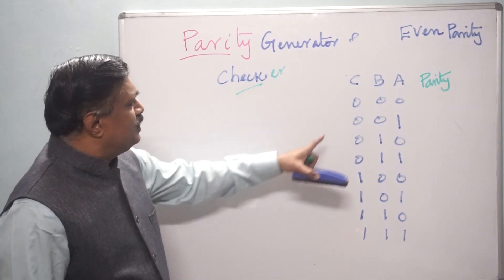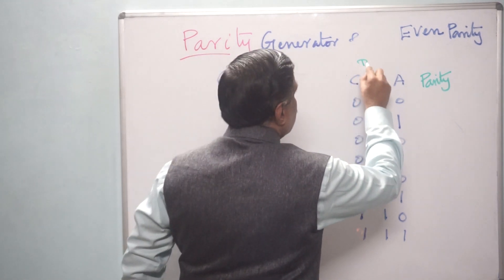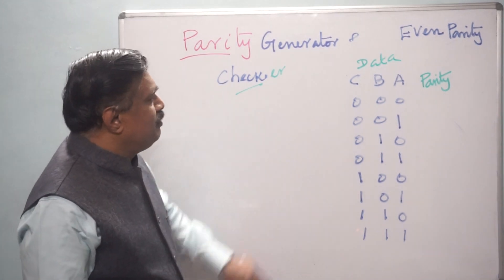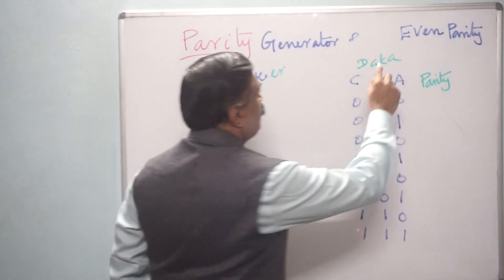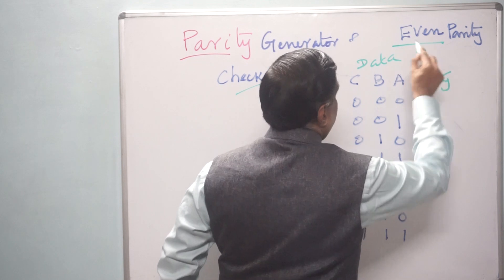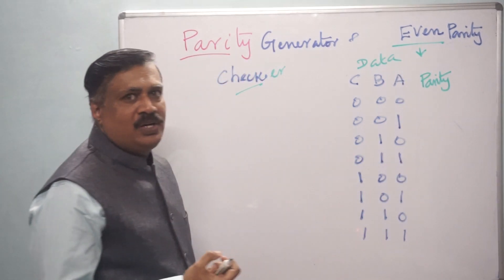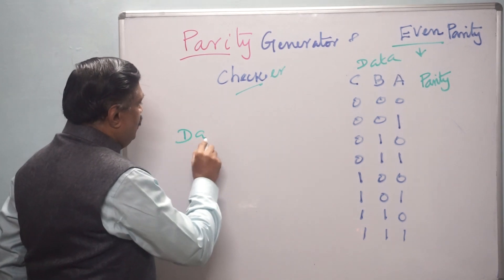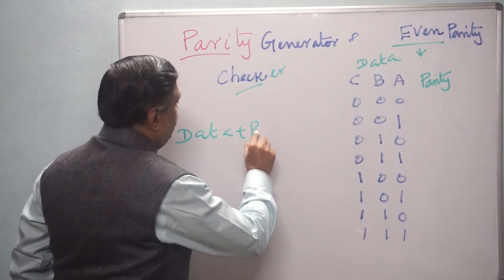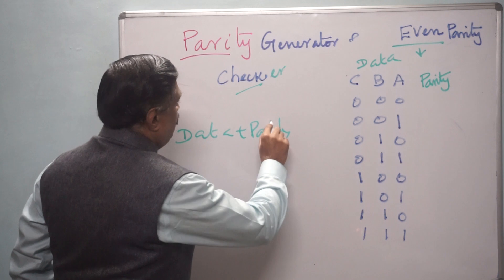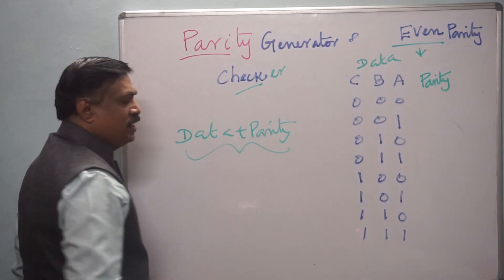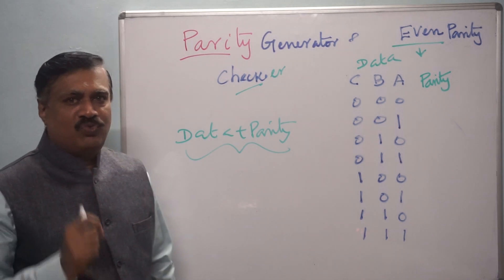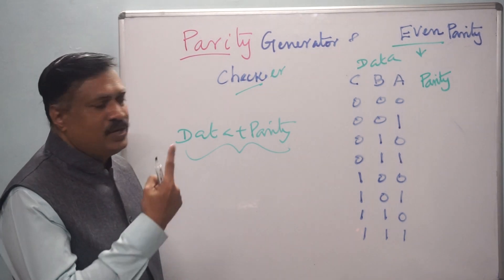Now this is the data bit — a 3-bit data bit. Now even parity means: including data plus parity, this is the modified data, the number of 1s should be even. Then it is called even parity.